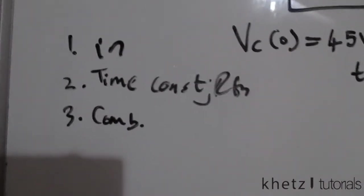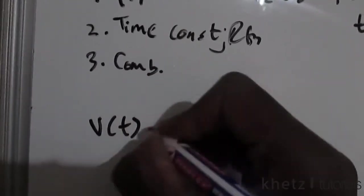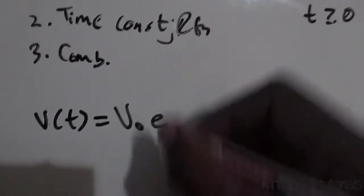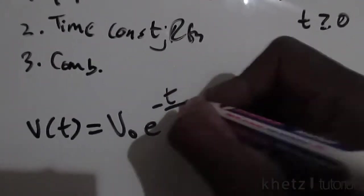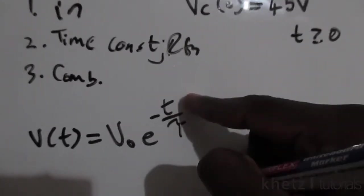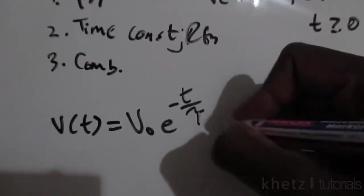The general formula says v(t) equals the initial voltage decaying at this particular rate, given by negative t divided by the time constant. This is in volts.